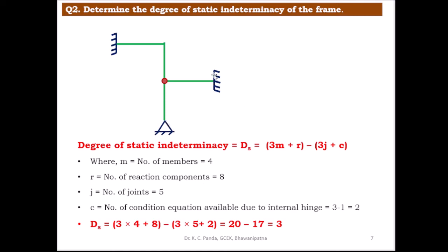At the joint with the internal hinge, 3 members meet, so c = 3 − 1 = 2. Therefore, ds = 3(4) + 8 − 3(5) + 2 = 12 + 8 − 15 + 2 = 20 − 17 = 3. This is the degree of static indeterminacy of this frame.